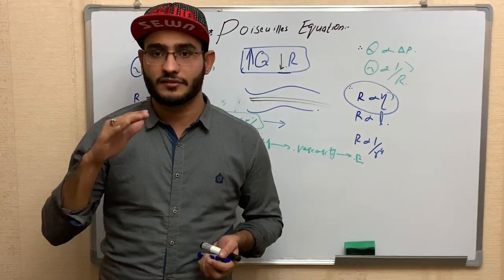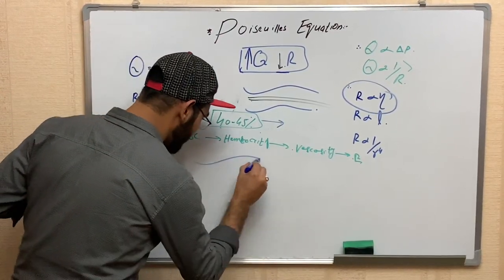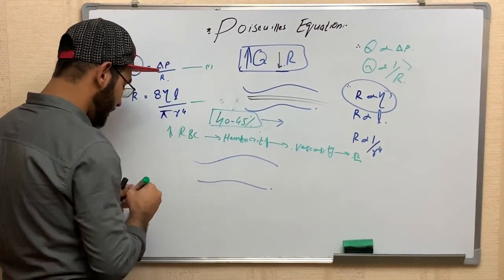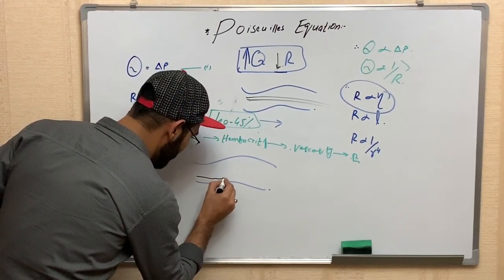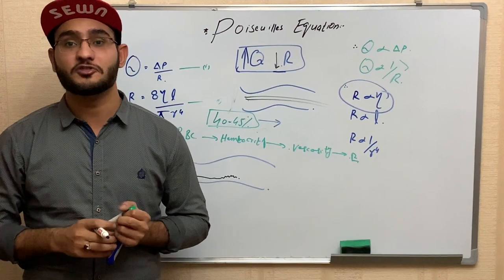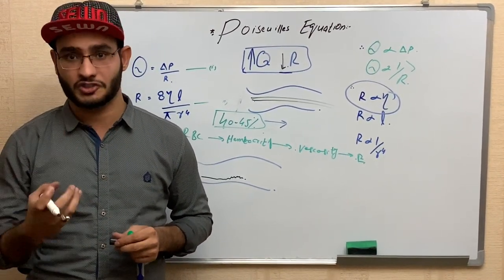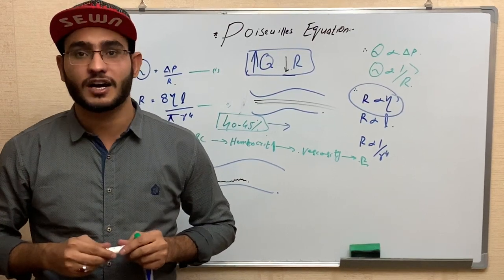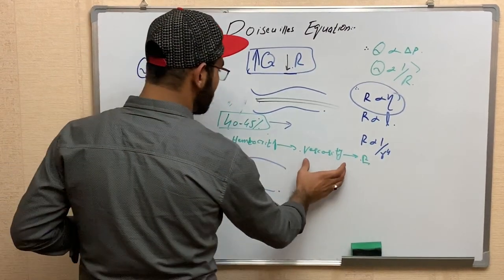When viscosity is high, even in a normal blood vessel, blood flows very slowly. This makes it very difficult for tissues to capture their own oxygen. When oxygen capture becomes difficult, it causes hypoxia, and at the end it can also lead to cell death. This illustrates how high viscosity affects blood flow.